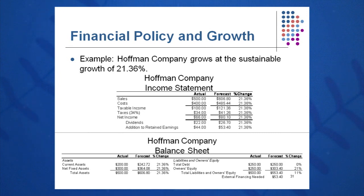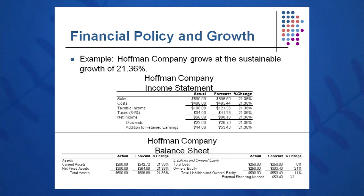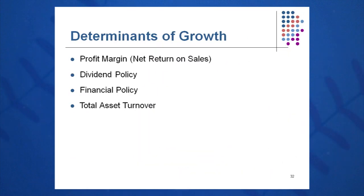If the debt-to-equity ratio was one last year, when I plug the required amount into debt, it should give me a similar debt-to-equity ratio of one. That confirms the correct sustainable growth rate of 21.36%. So try this Hoffman example: start with year one, multiply everything by 1.2136, and verify that you come out with the same debt-to-equity ratio after plugging the entire plug into the debt account. The balance sheet must balance at the very end.